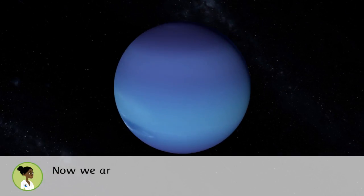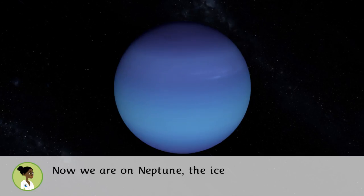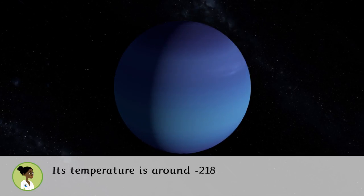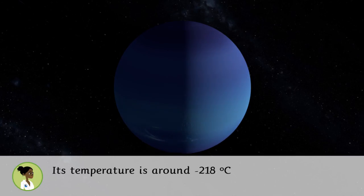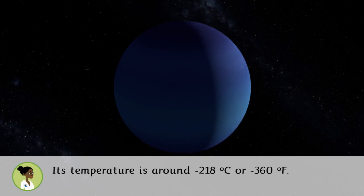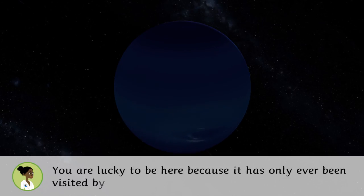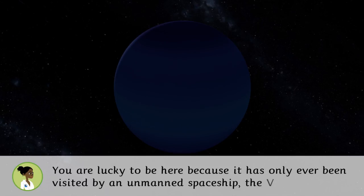Now we are on Neptune, the ice giant. Its temperature is around 218 degrees Celsius below zero or 360 degrees Fahrenheit below zero. You are lucky to be here because it has only been visited by an unmanned spaceship, the Voyager 2.